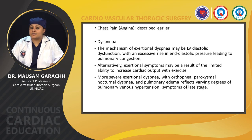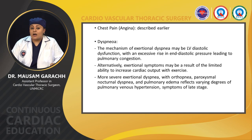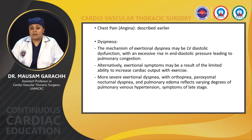Regarding dyspnea: the mechanism of exertional dyspnea may be LV diastolic dysfunction with an excessive rise in end-diastolic pressure leading to pulmonary congestion. Alternatively, exertional symptoms may result from limited ability to increase cardiac output with exercise. More severe exertional dyspnea with orthopnea, paroxysmal nocturnal dyspnea, and pulmonary edema reflects varying degrees of pulmonary venous hypertension and are symptoms of a later stage.